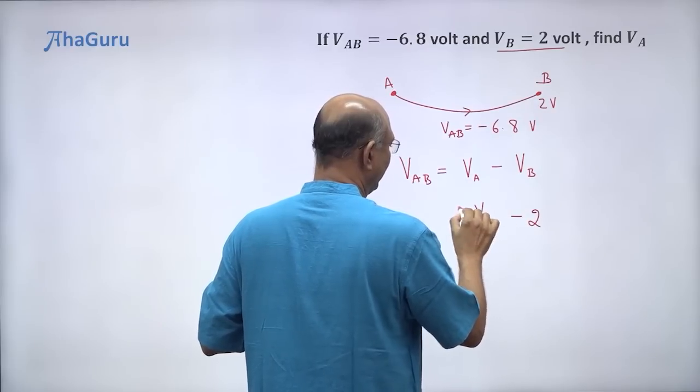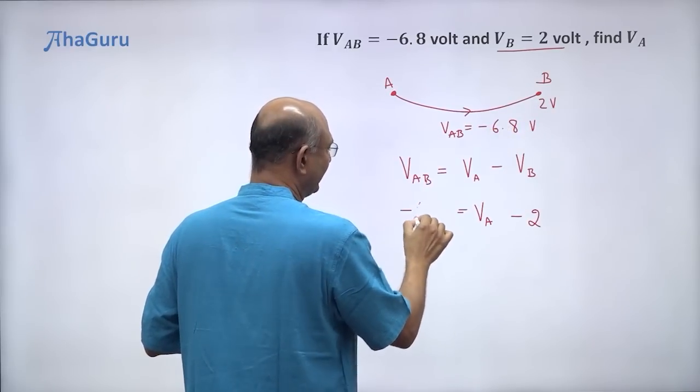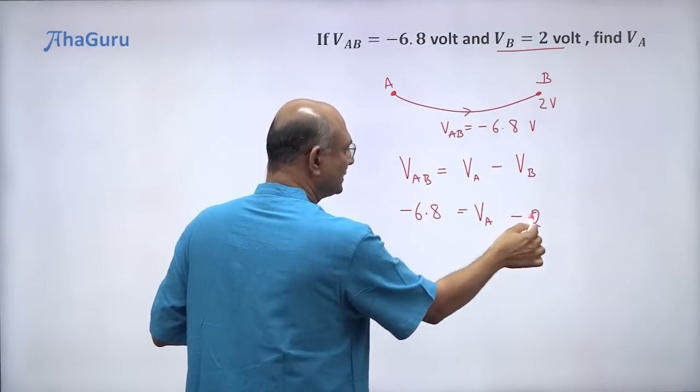VA we don't know, that's what we need to find. VAB is minus 6.8, that is given. So just bring the 2 to this side.